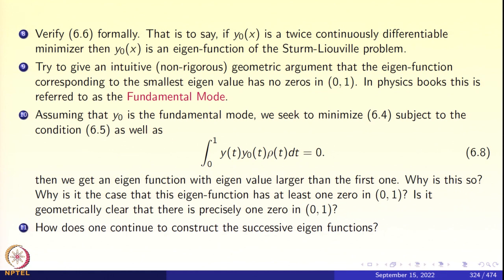Try to give an intuitive, non-rigorous geometrical argument that the eigenfunction corresponding to the smallest eigenvalue has no zeros in the interval (0,1). The problem is: y(t) is the eigenfunction corresponding to the smallest eigenvalue, satisfying y double-prime plus lambda rho y equal to 0, with lambda the smallest eigenvalue and boundary conditions y(0) = 0 and y(1) = 0. This is called the fundamental mode in physics of vibrations. This particular function y(t) has no zeros in the open interval (0,1).